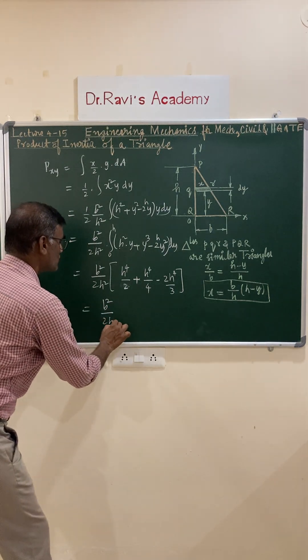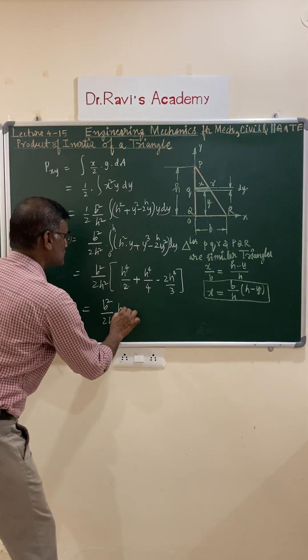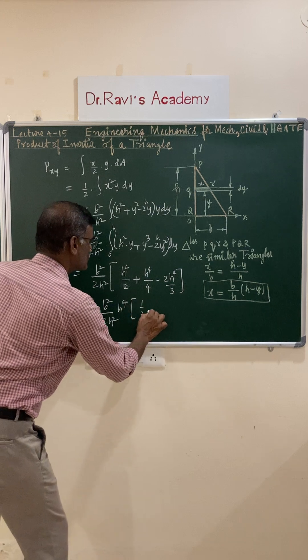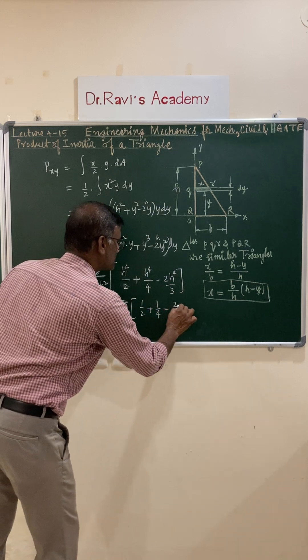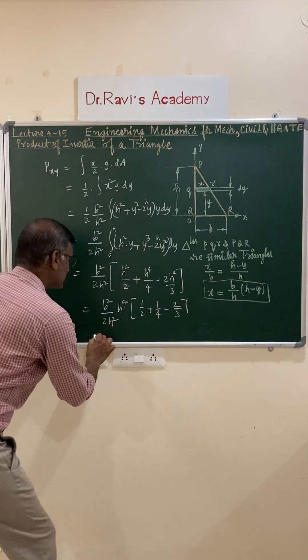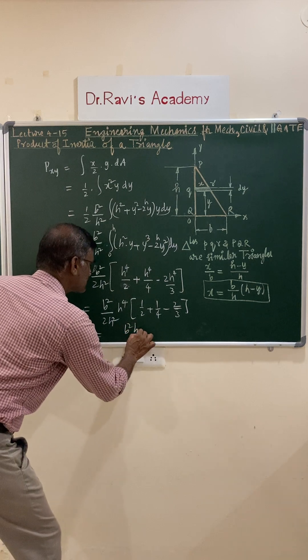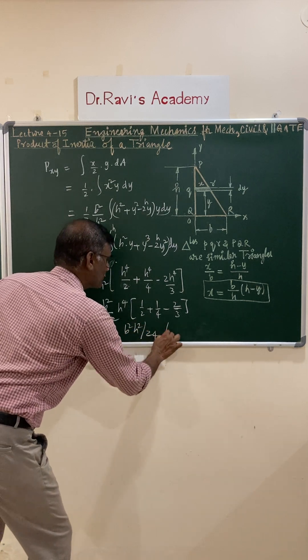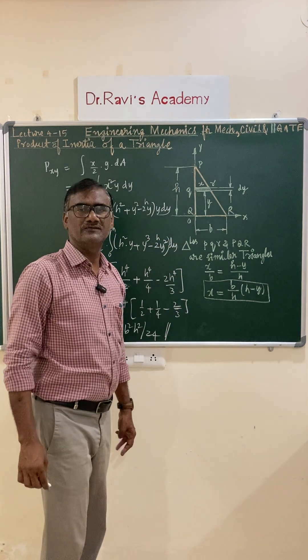You have b squared by 2h squared. If you take h to the power 4 outside, you have 1 by 2 plus 1 by 4 minus 2 by 3, and this value is b squared h squared by 24. Thank you for watching this video.